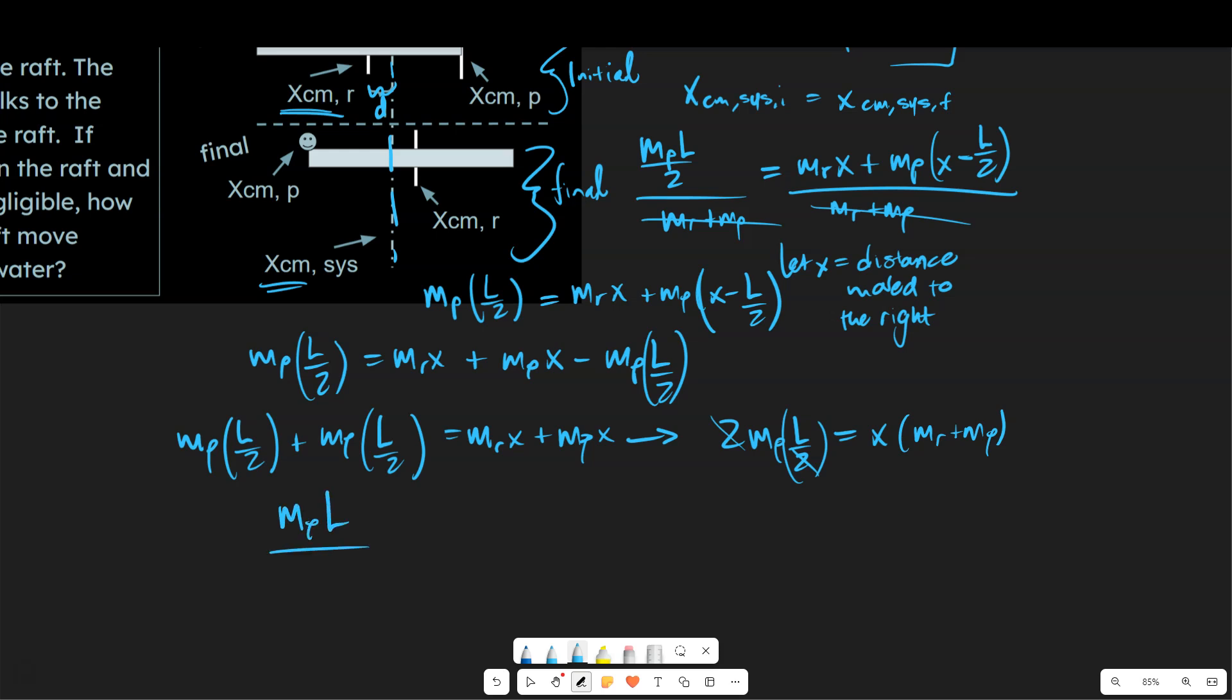And let's just go ahead and take that last step there. M_R plus M_P. And just bring my x out to the left, just a preference thing. So this is going to be where our position is, the final position. And so that's how far the whole system has shifted to the right is this value.